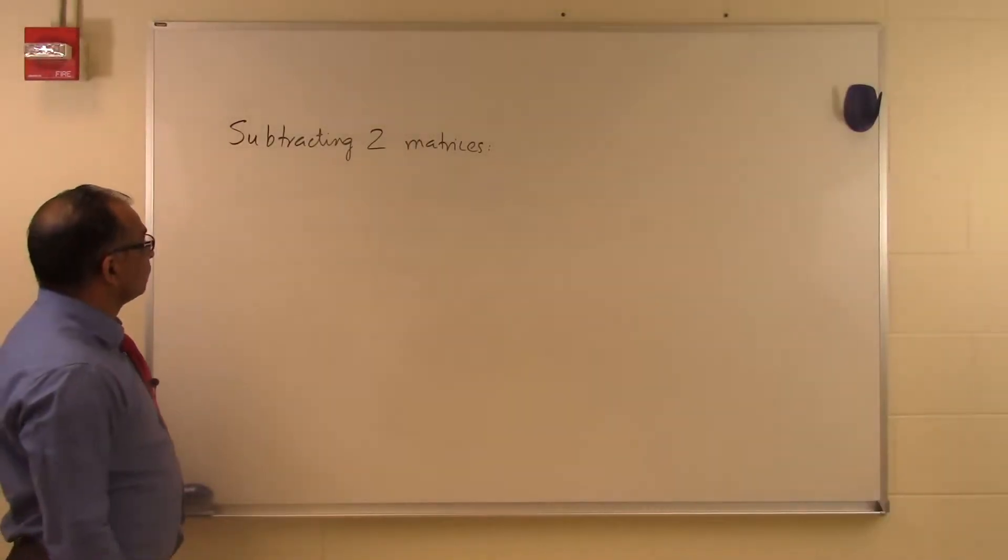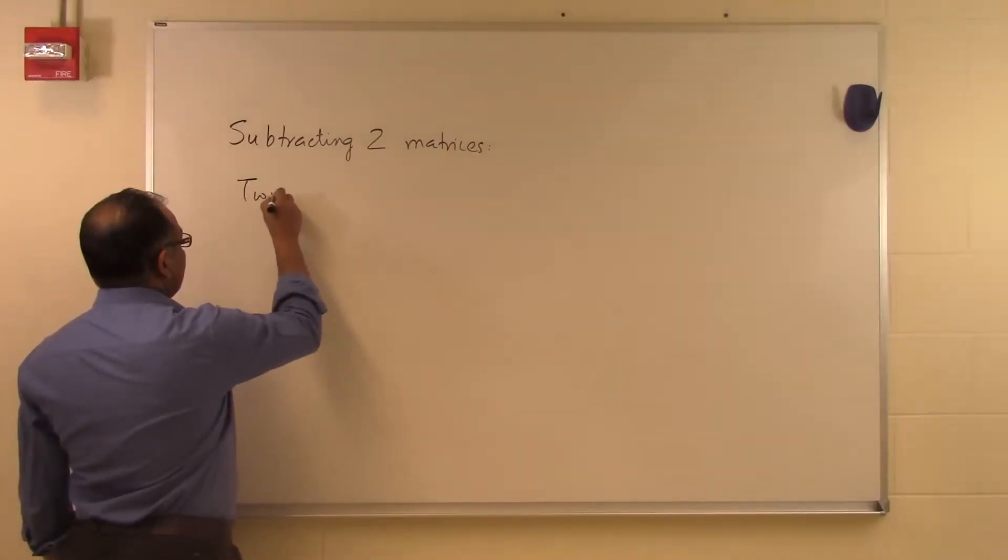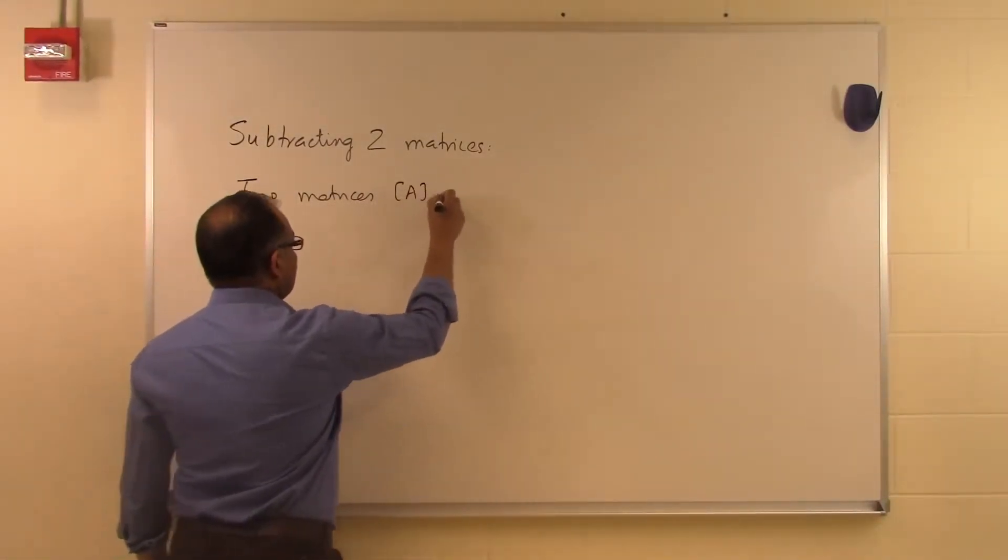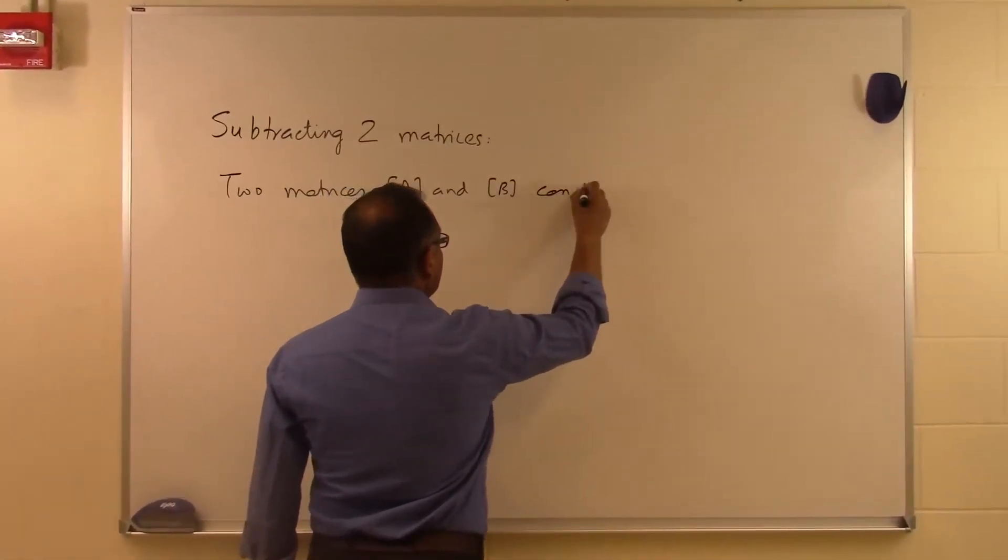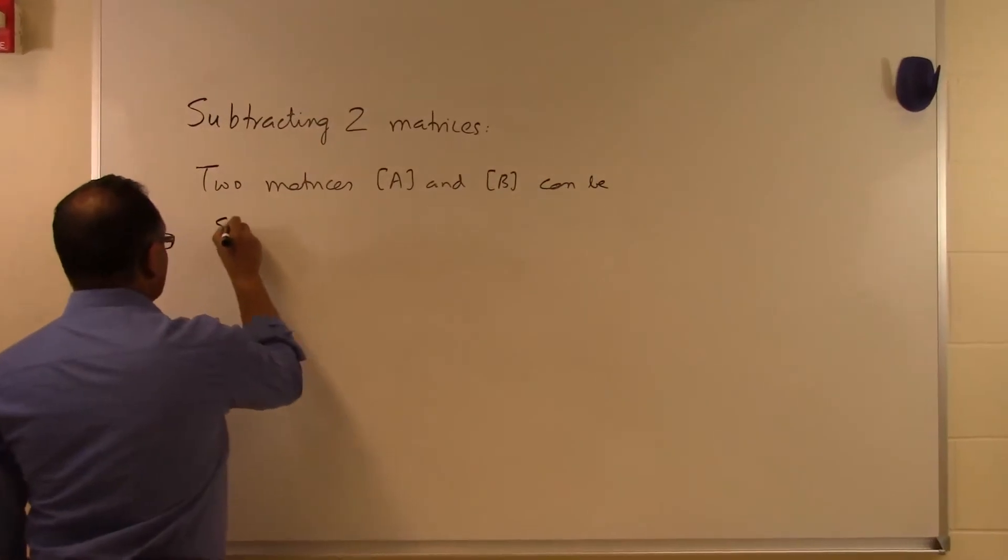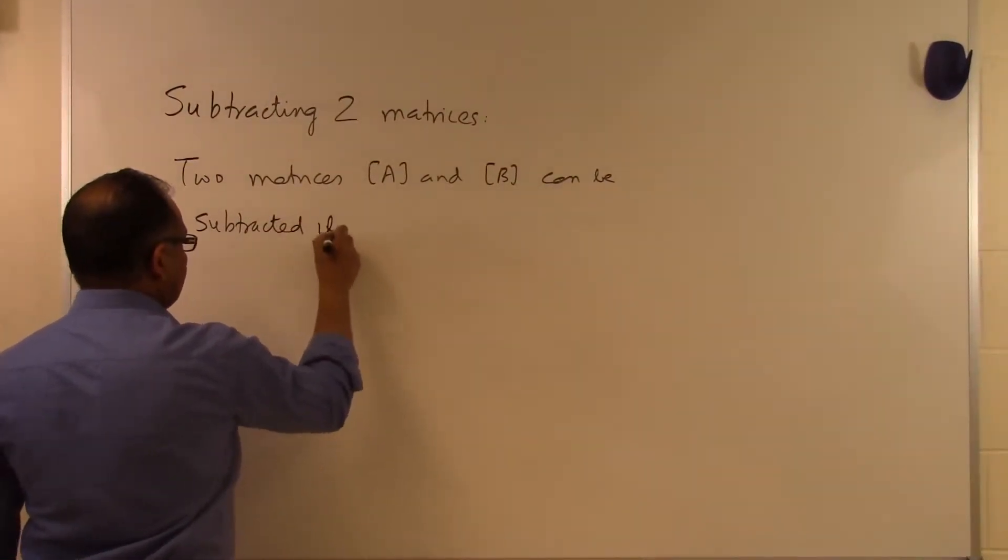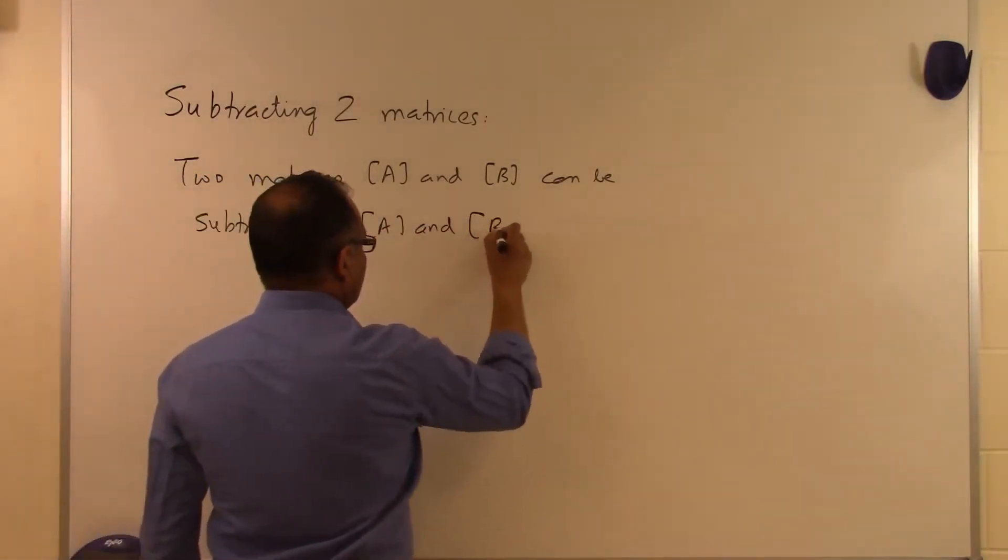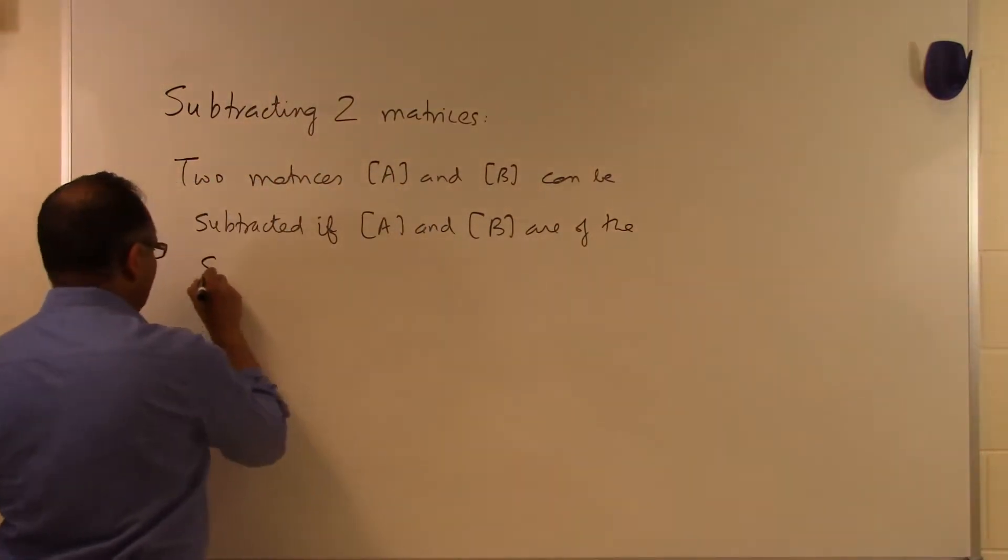In this segment we'll talk about how do we subtract two matrices. So two matrices A and B can be subtracted if A and B are of the same size.